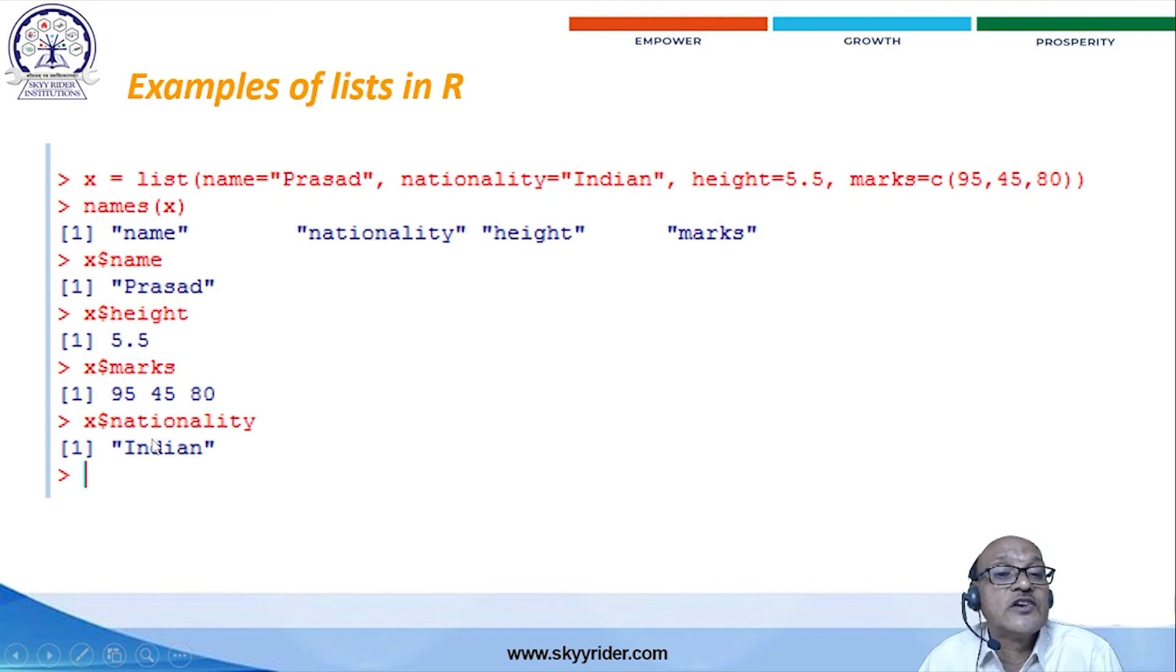Like, you will get the Indian. In case of you want to go for height, X dollar symbol, height. You will get values. You want to go for marks, for example. X dollar symbol, marks. You will get values. These are the creation of the list in R programming.